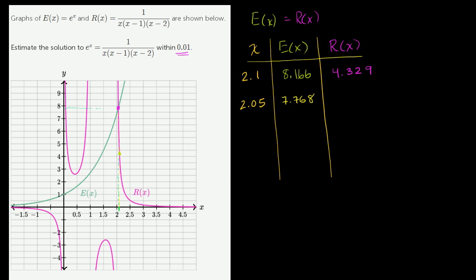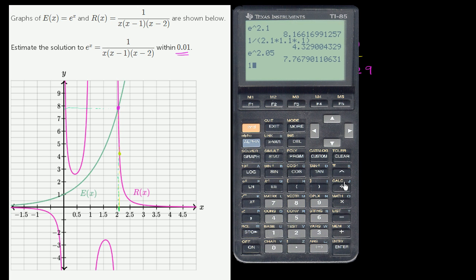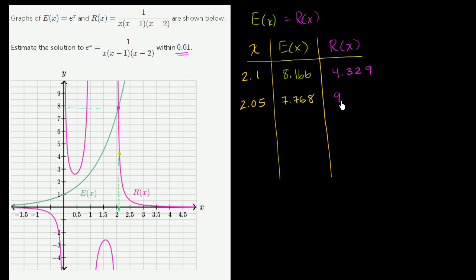Let's evaluate R(x) when we're at 2.05. It's going to be 1 divided by x, which is now 2.05, times x minus 1, which is 1.05, times x minus 2, which is 0.05, and that gets us to 9.292.